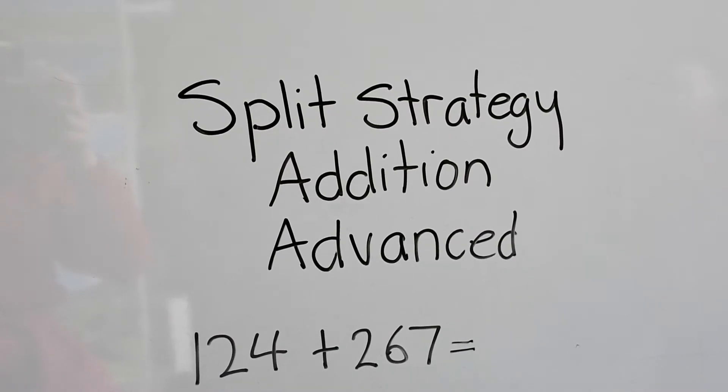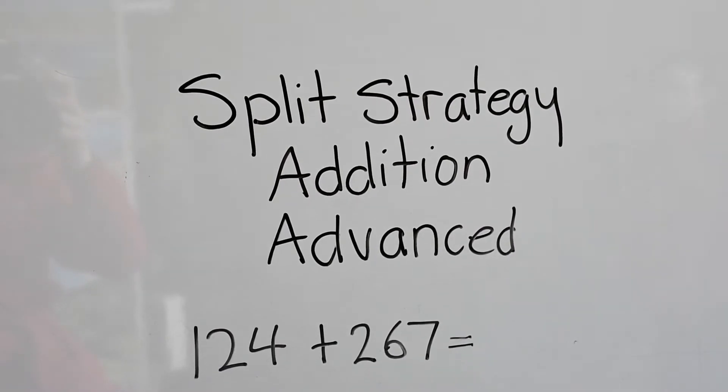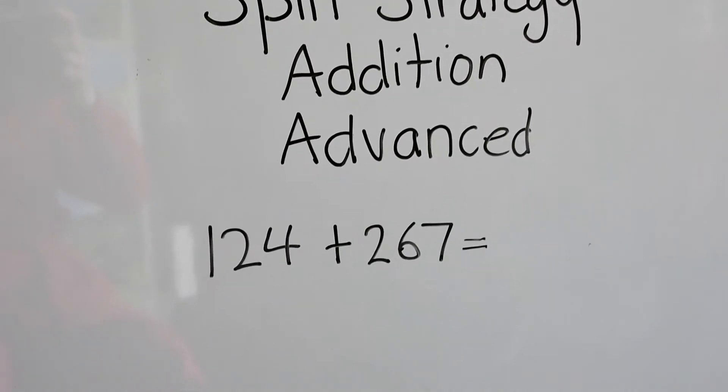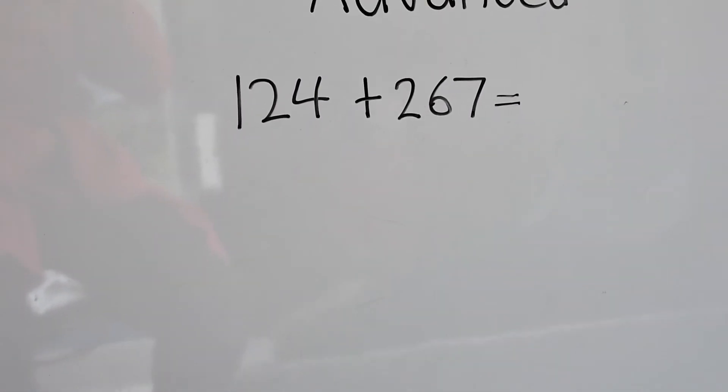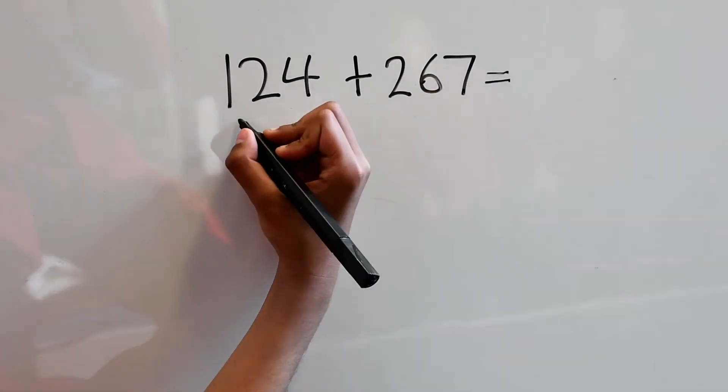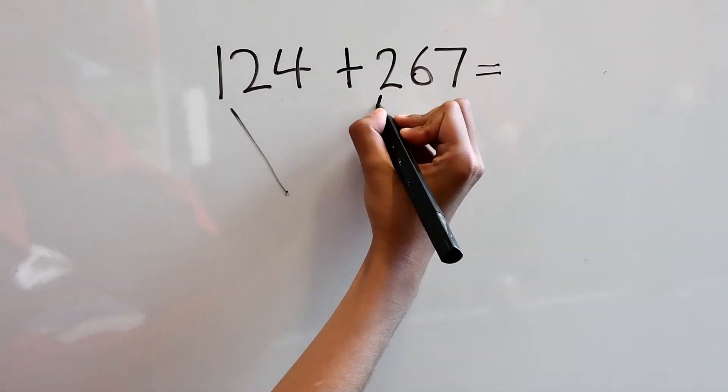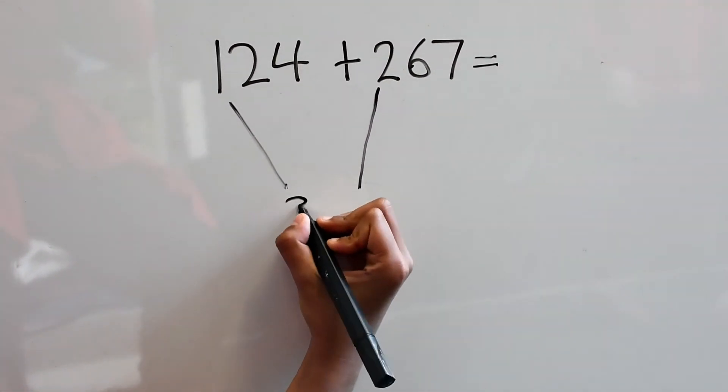Split strategy addition advanced. When you do the split strategy you start off with the highest place value. In this case it's the hundreds column. So we're going to add 1 and 2 which is 100 and 200. So that goes to 300.